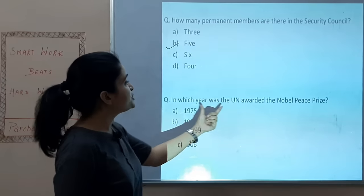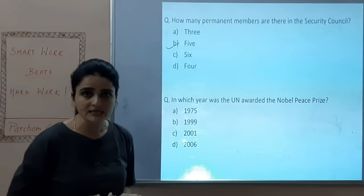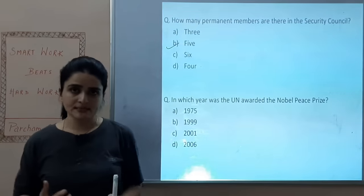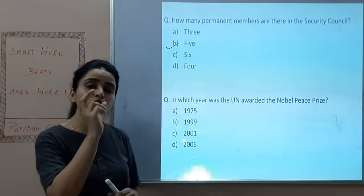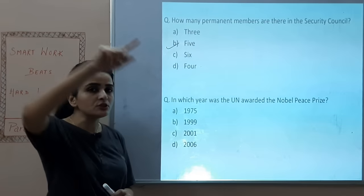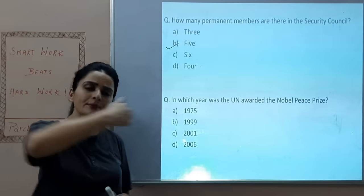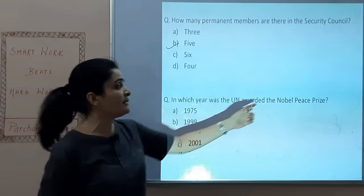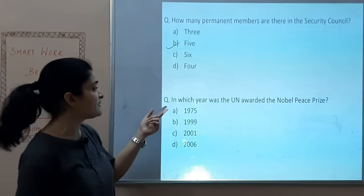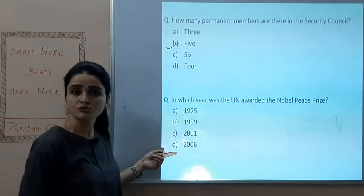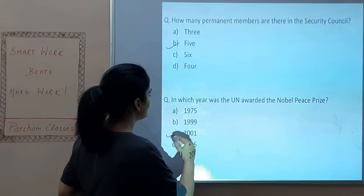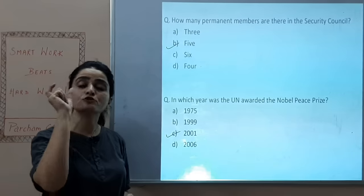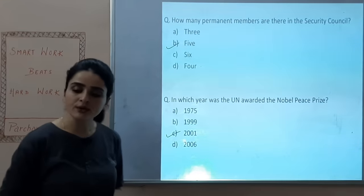In which year was the UN awarded the Nobel Peace Prize? Options: 1975, 1999, 2001, or 2006. The United Nations has been associated with many Nobel Prize winners through its agencies, but the UN itself received the Nobel Peace Prize in 2001.